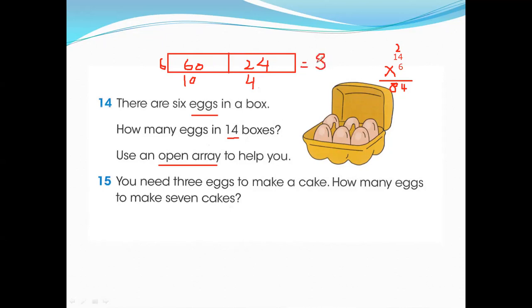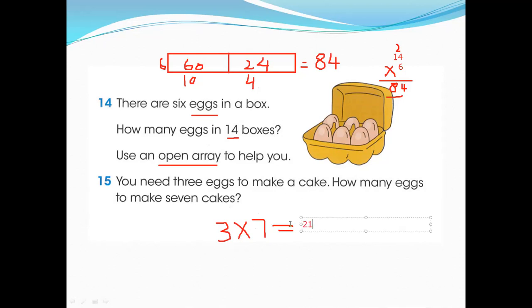You can see the answer is the same with both methods — the standard method and the open area method both give 84. Next: you need three eggs to make one cake. How many eggs to make seven cakes? Three multiplied by seven equals 21. So we need 21 eggs.